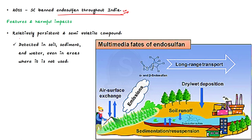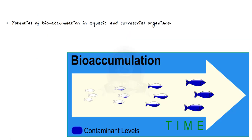The first feature is that it is a relatively persistent and semi-volatile compound. This means that Endosulfan lasts long in the environment because it is less likely to get vaporized. As a result, Endosulfan is detected in soil, sediment, and water, even in areas where it has not been used. Secondly, it has the potential to bioaccumulate in aquatic and terrestrial organisms. Bioaccumulation refers to the gradual buildup of chemicals in a living organism over time.